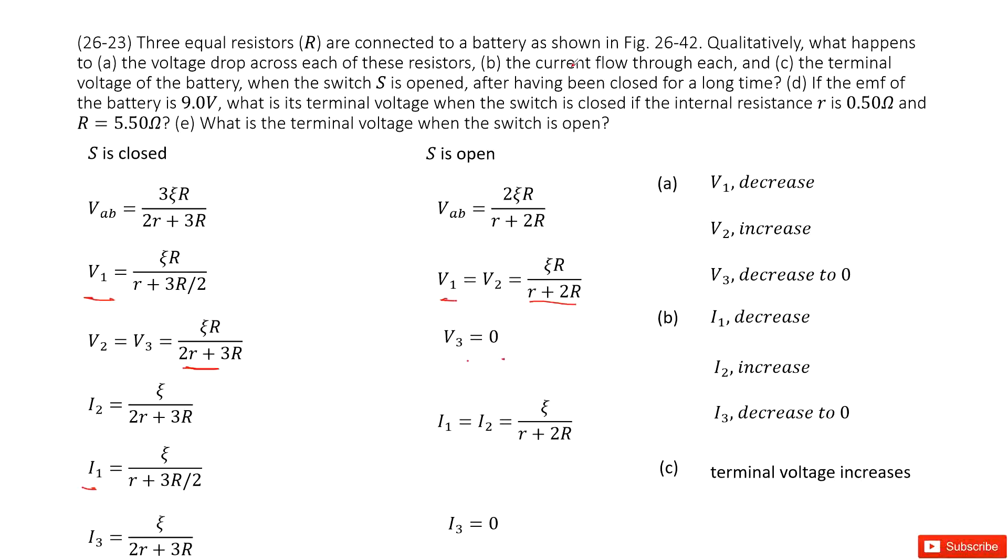And the third one, how the terminal voltage changes. So how the terminal voltage changes, we can see the VAB, how it changes. It may be difficult for you to compare it, but I have a small trick. You can give it a number, and the capital R equal to 1. If this is 1, that is 3 over 5 epsilon. That is 2 over 3 epsilon. So of course, the VAB increases. This is a small trick when you compare the terms.